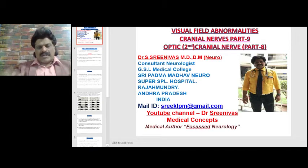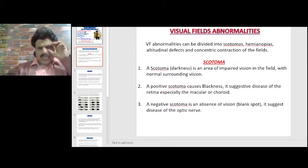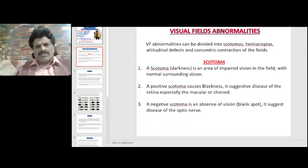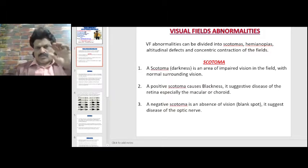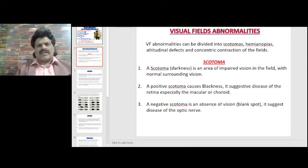Visual field abnormalities can be divided into scotomas, pertaining to only one eye; hemianopias, wherein the defects are seen in both eyes; altitudinal defects, whether superior or inferior; or concentric contraction of the fields.